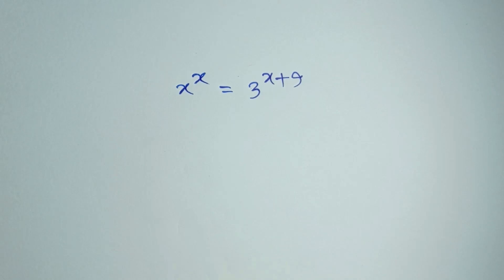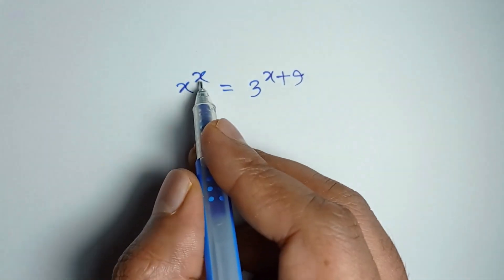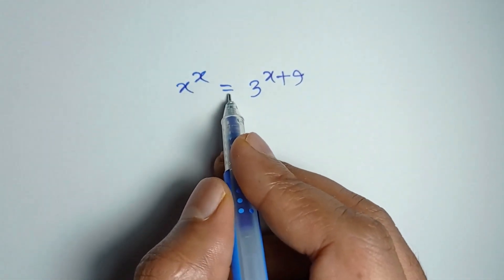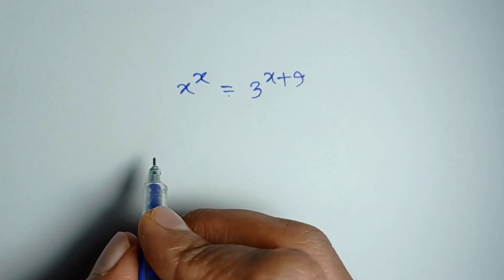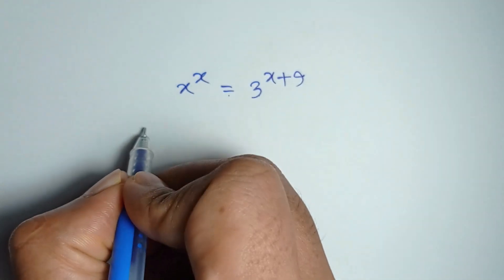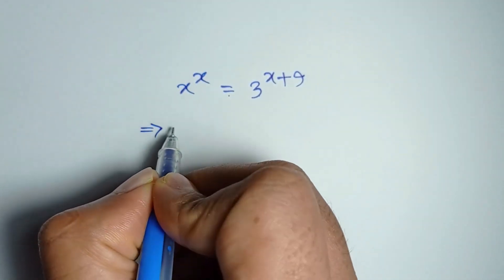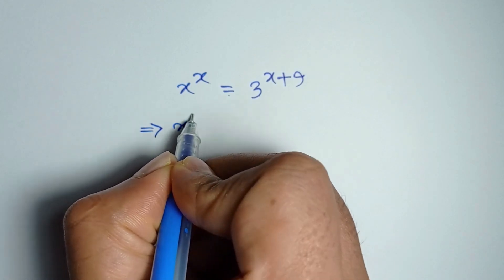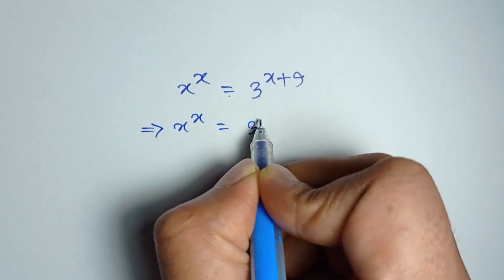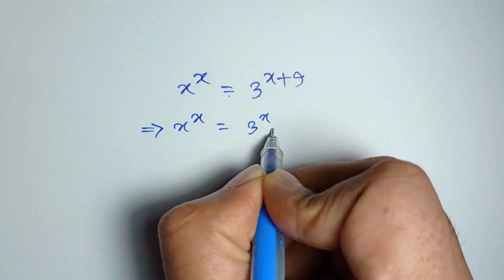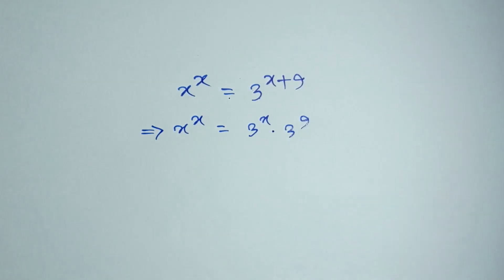Hi everyone, we have an equation to solve: x to the power x is equal to 3 to the power x plus 9, or x to the power x is equal to 3 to the power x times 3 to the power 9.